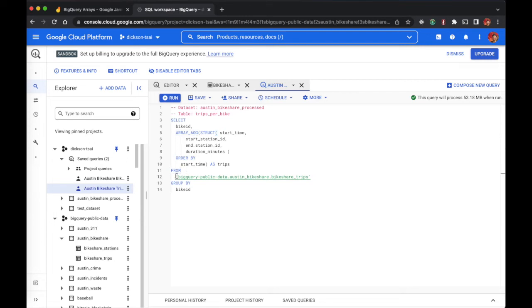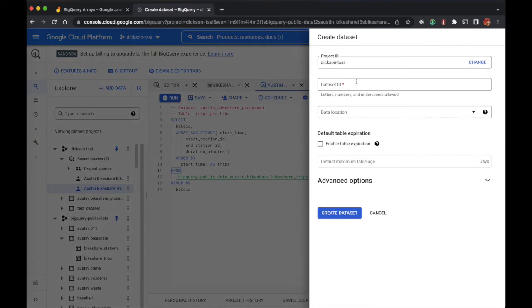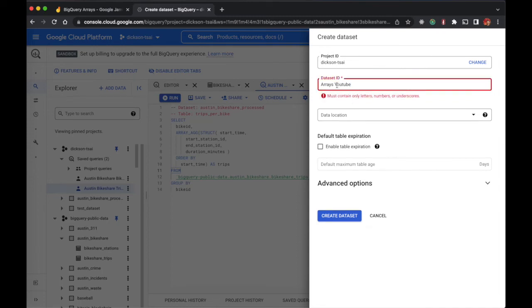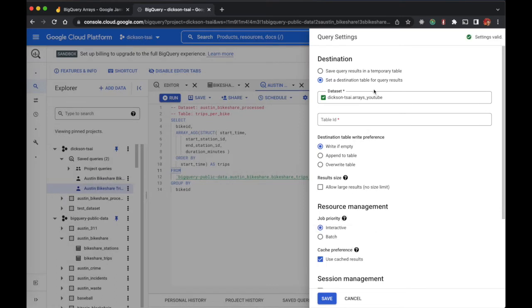So this will be one bundle per trip, and then we'll have a list of trips for each bike. So from this BigQuery public data set, you can go into More, click on Query Settings, and then you can write this query into an output. So rather than saving this in a temporary table, we'll select a destination. You can create a new data set. I'll just call this arrays YouTube, and then it needs to be underscore, sure, arrays YouTube.